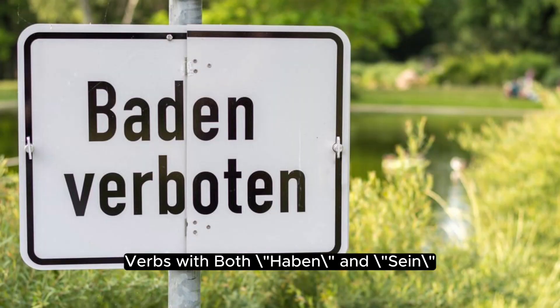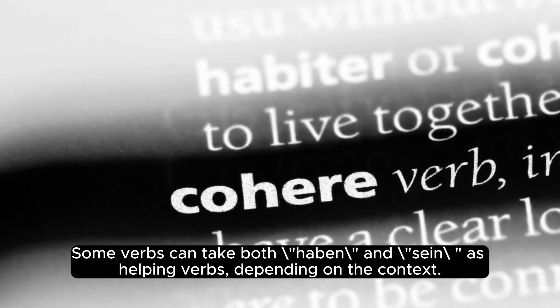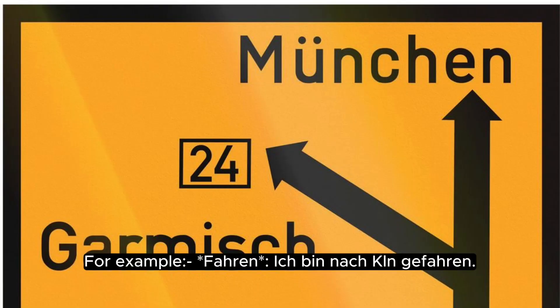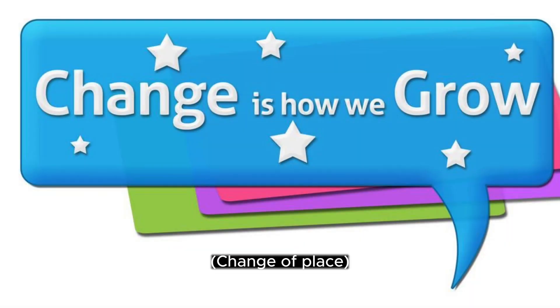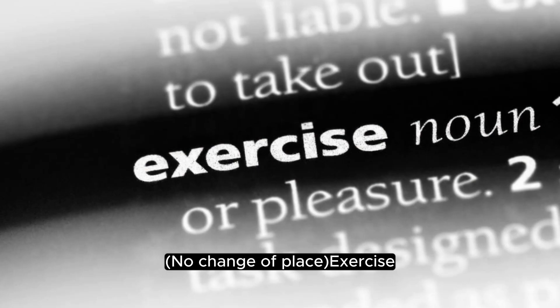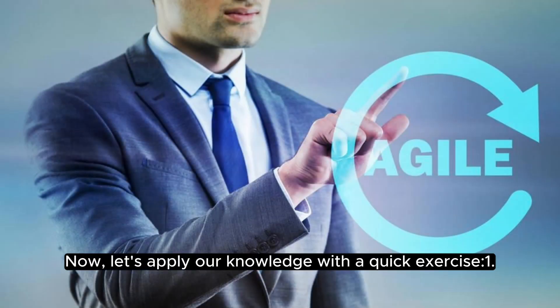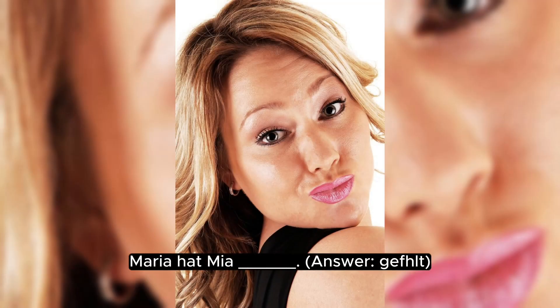Verbs with both Haben and Sein. Some verbs can take both Haben and Sein as helping verbs depending on context. For example, fahren: change of place — wir sind gefahren; no change of place — wir haben gefahren.